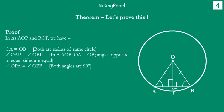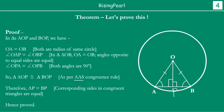Therefore, triangle AOP is congruent to triangle BOP as per the AAS — Angle Angle Side — congruence rule. So now we know AP equals BP, because corresponding parts of congruent triangles are always equal. Hence, we have proved what we wanted to prove.